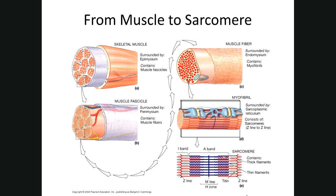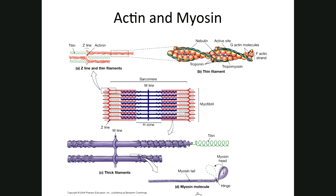Actin is a double-stranded helix of actin protein molecules — like a pearl necklace twisted into a helix. Another protein, tropomyosin, lies in the groove of the actin double helix, basically following the twisting motion along its length.